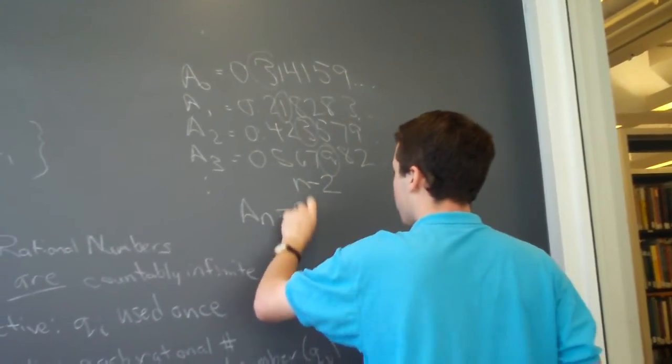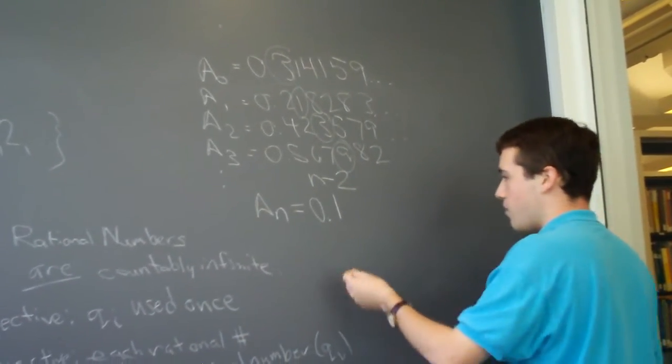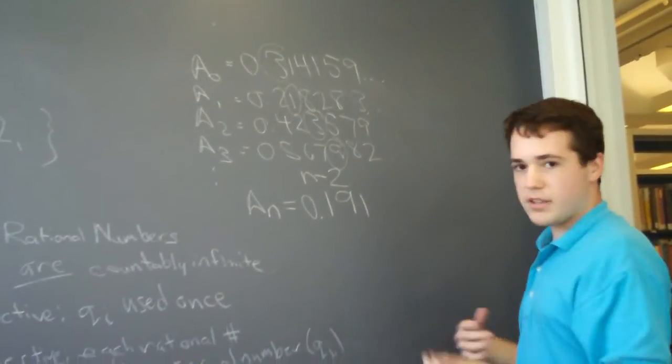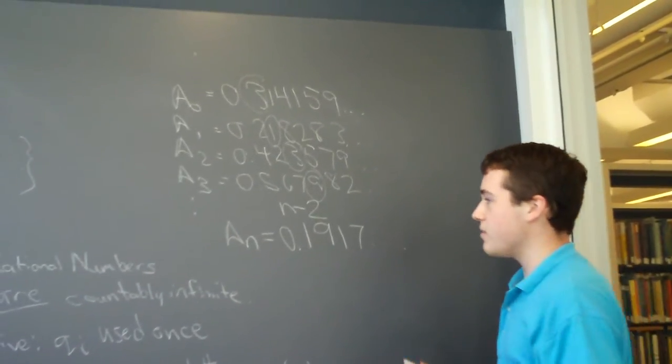So, we have 3 minus 2, gives 0.1. 1 minus 2 is negative 1, but in this case, 9. 3 minus 2 is 1, and 9 minus 2 is 7. And we continue on like this as we continue down the list of the real numbers.